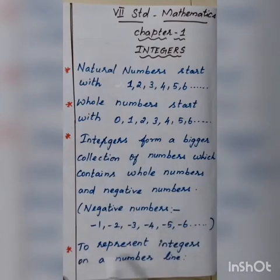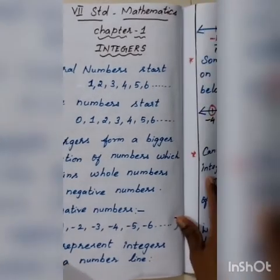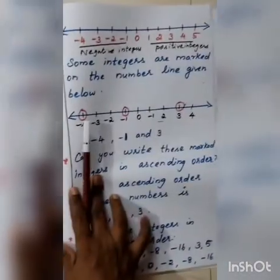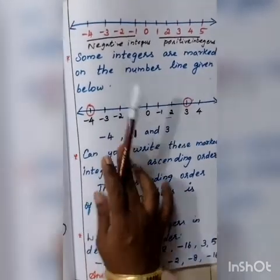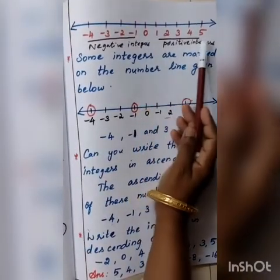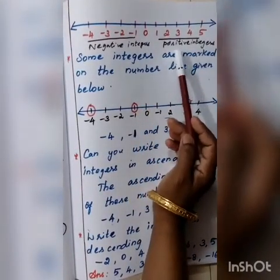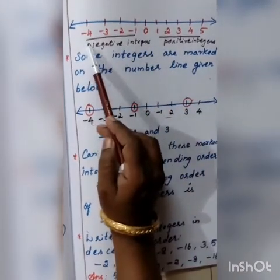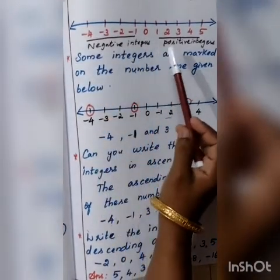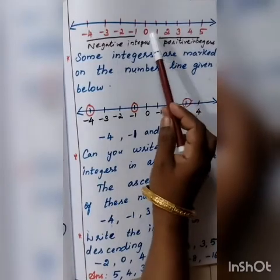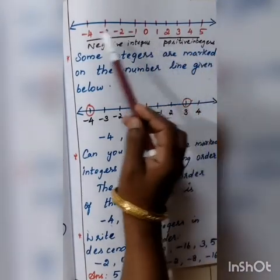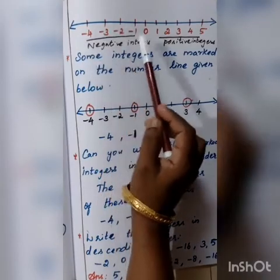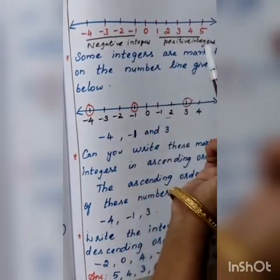Next we see how to represent integers on a number line. This is your number line. The center of the number line is 0. The right side of 0 contains positive integers, and the left side of 0 contains negative integers.